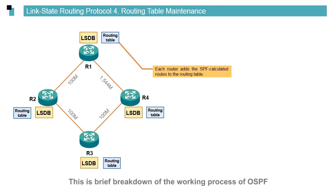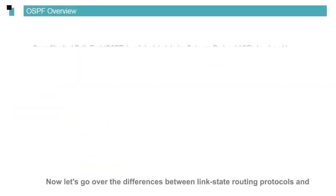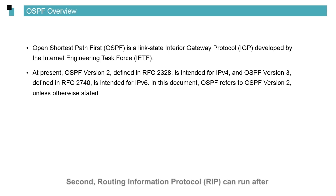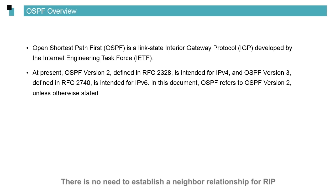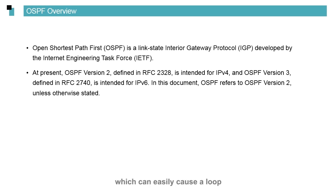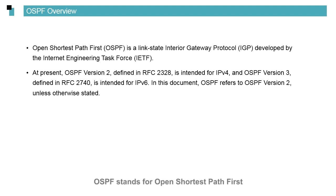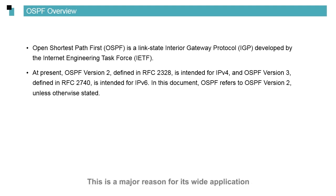Now let's go over the differences between link state routing protocols and distance vector routing protocols. First, a distance vector routing protocol updates routes by rumor. Second, RIP can run after the protocol has been activated on an interface — there is no need to establish a neighbor relationship for RIP. Third, RIP is not able to understand the entire network topology, which can easily cause a loop. To resolve loop problems, RIP defines anti-loop mechanisms such as route poisoning and poison reverse. OSPF uses the SPF algorithm to prevent a loop from the ground up.